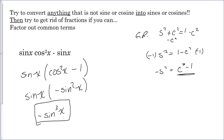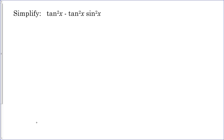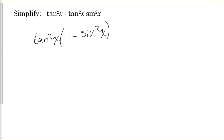Let's look at another example: simplify tangent squared x minus tangent squared x times sine squared x. Tangent is already sine over cosine, so we'll leave it alone, and there are no fractions. Factor out tangent squared x, leaving you with one minus sine squared x. From the golden rule, sine squared plus cosine squared equals one, so subtracting sine squared from both sides gives cosine squared equals one minus sine squared.